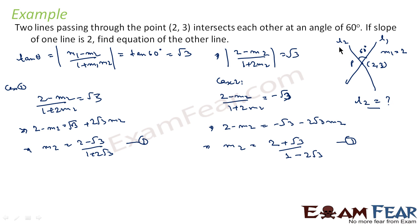We have got two values of m2. This makes sense geometrically: if l1 is fixed, 60 degrees can be measured to one side or the other, so there can be two possible lines l2. Correspondingly, we get two equations of line l2. Now we have two slope values and the point (2, 3), so we will find both equations.